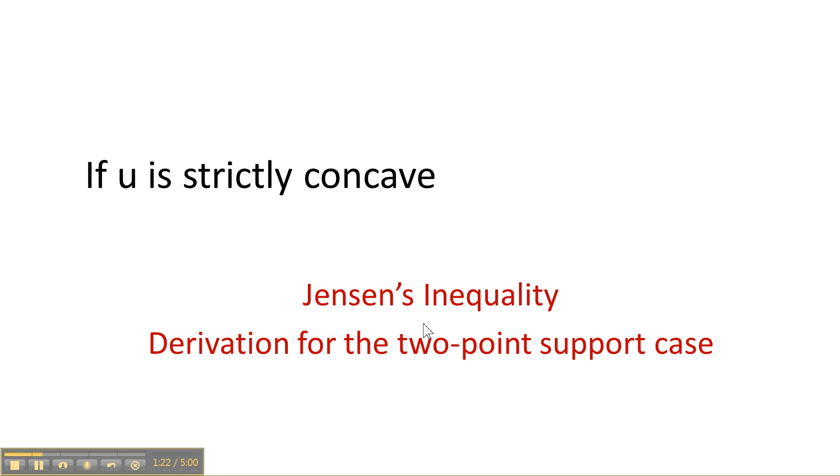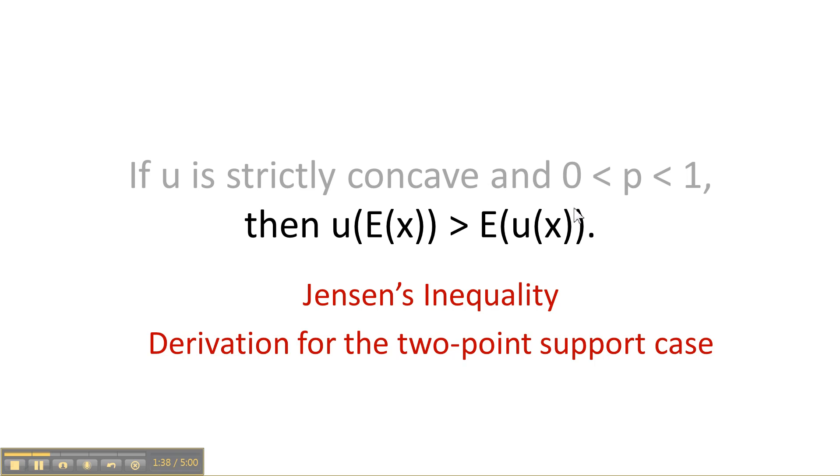Now let's talk about Jensen's inequality in this case. Again, u is strictly concave and the probability now is strictly between 0 and 1, so we're ruling out certainty. There is definitely randomness here. The conclusion is then the utility of getting the expected dollar amount for certain is greater than the expected utility of the lottery. And this is a statement of risk aversion. The person does not like risk.